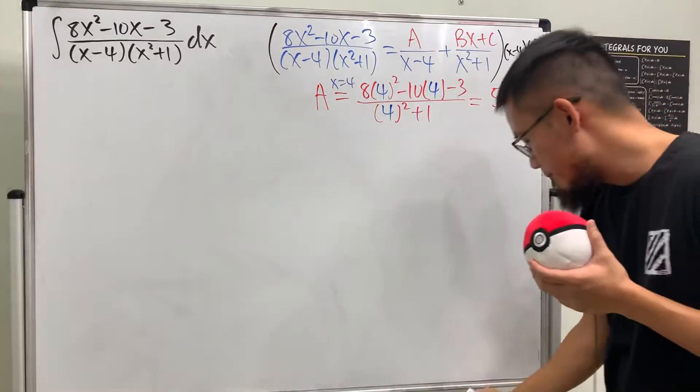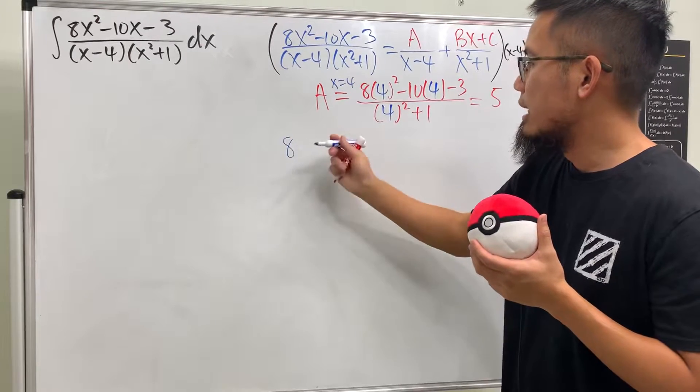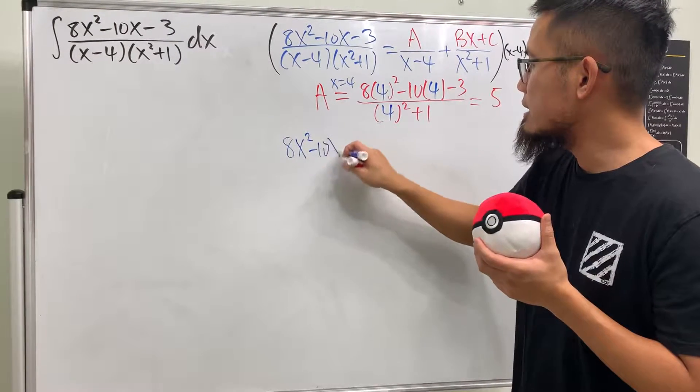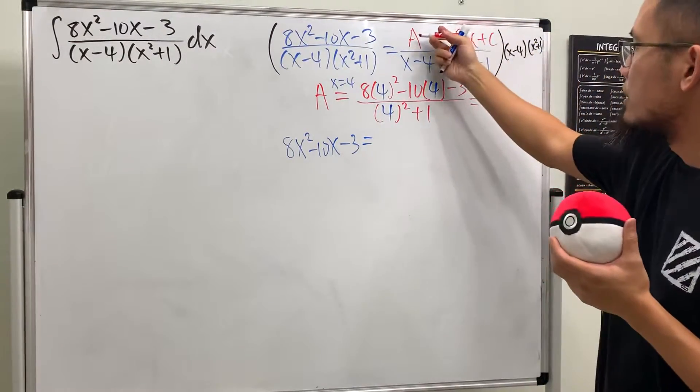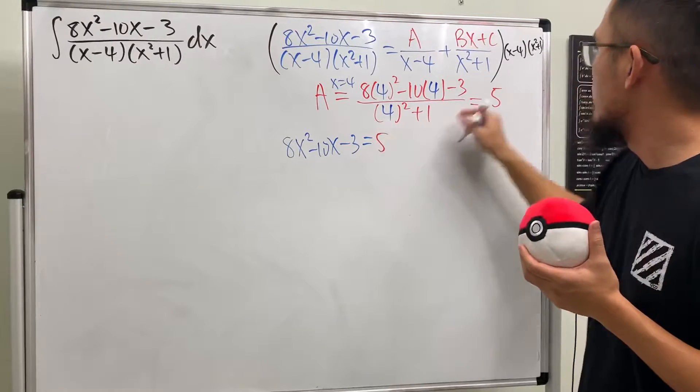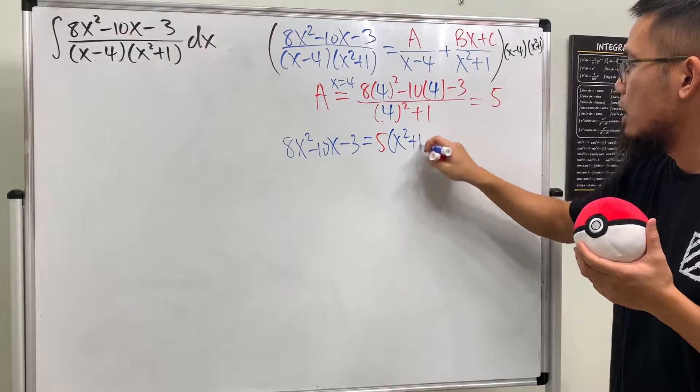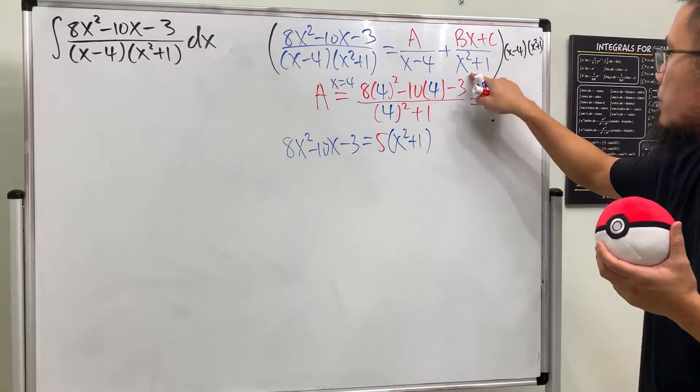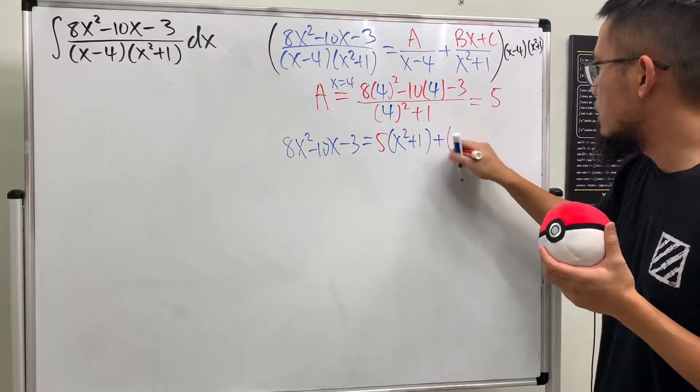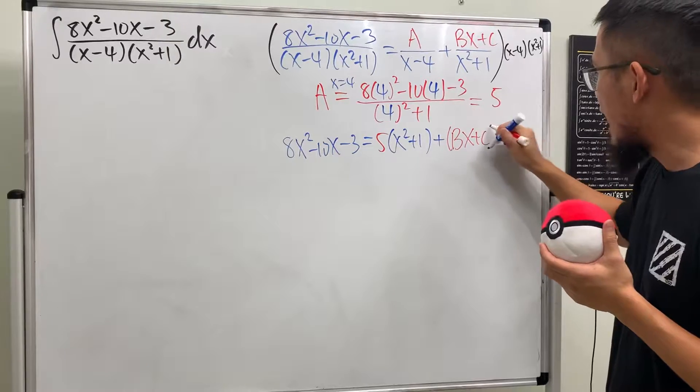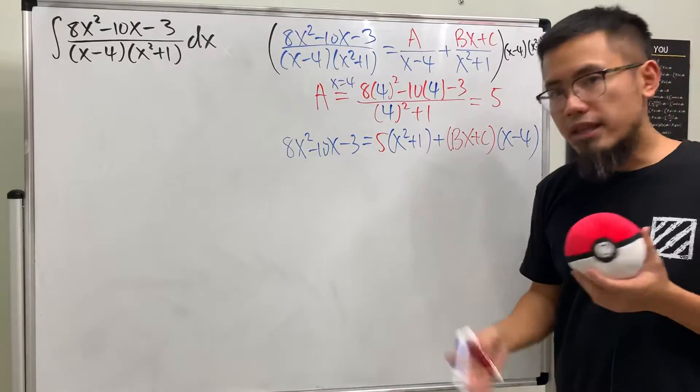When we do this we will get 8x² - 10x - 3. When we do this times that, remember A is 5 already, and then this and that will cancel and we will have x² + 1. And then this and that multiply, the x² + 1 will cancel and we'll just have (Bx + C) times (x - 4).